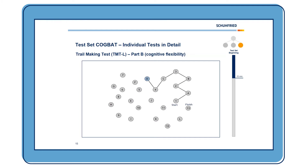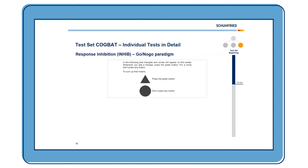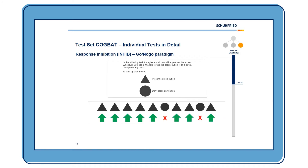After this measurement of executive functions, there is another test called INHIP, which measures response inhibition in a go/no-go paradigm. The client is presented with different figures — triangles and circles. Triangles are the go stimuli, where the client has to press the green button. Circles are the no-go stimuli, where the client does not press any button. There are frequent go stimuli and rare no-go stimuli, and we measure whether the client can inhibit their own response.